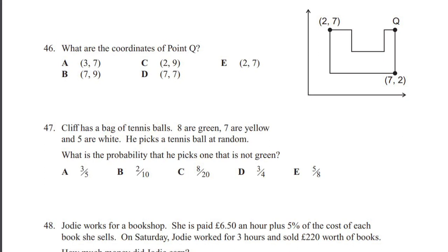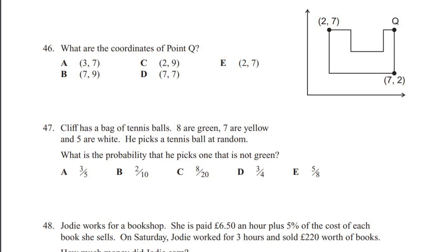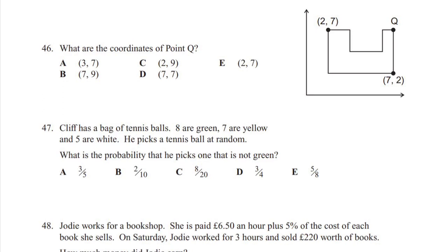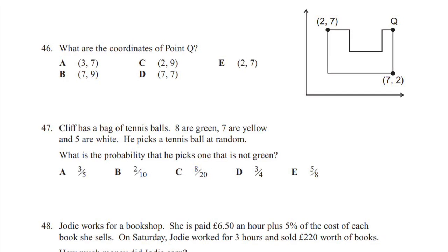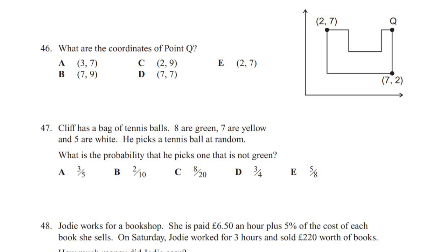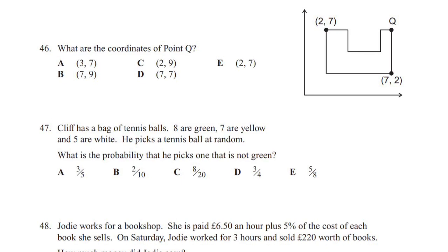So, we need to add 8, 7, and 5. Eight plus seven is 15 plus five is 20. So now we know that the probability of getting a green ball is 8/20, the probability of getting a yellow ball is 7/20, and the probability of getting a white ball is 5/20.